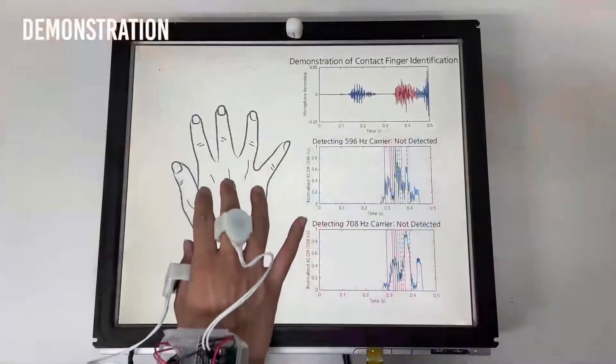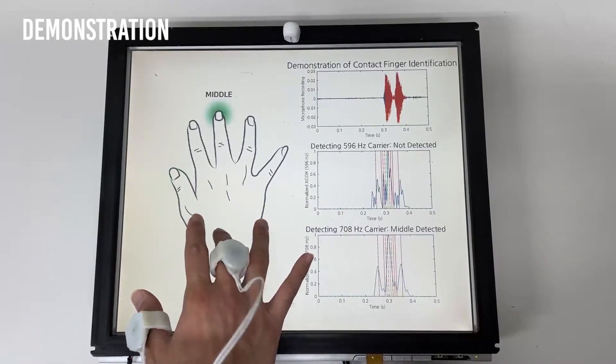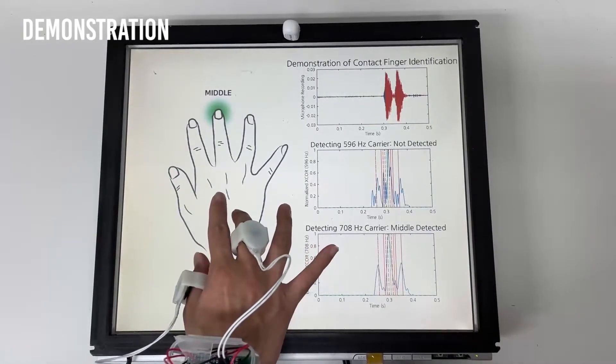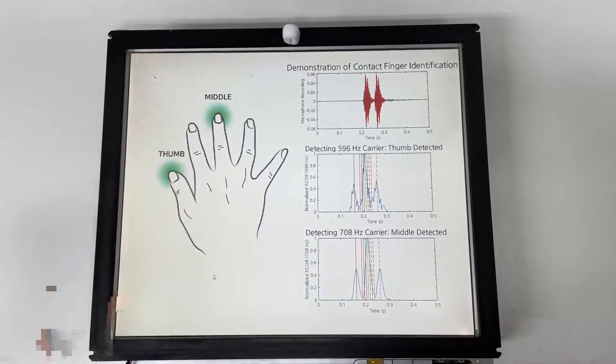In this research, we transmit encoded vibrations to identify contact fingers instead of transmitting complex data sequences. The use of vibration enables cost-effective communication between a user and device.